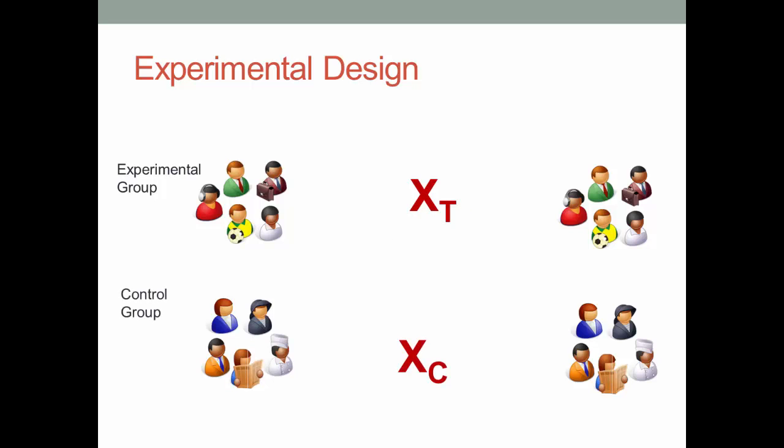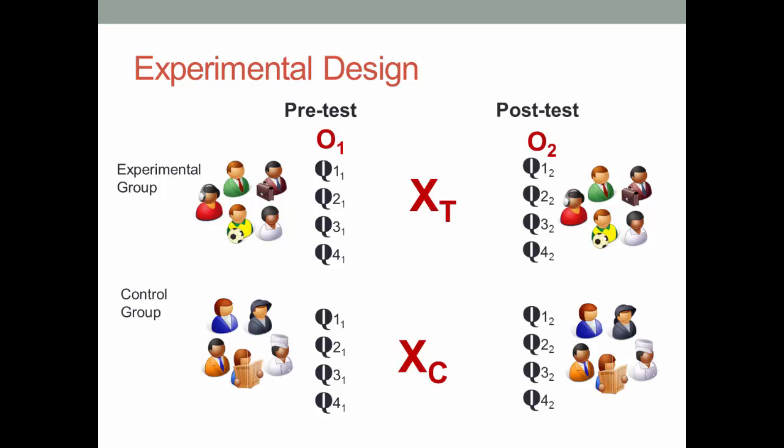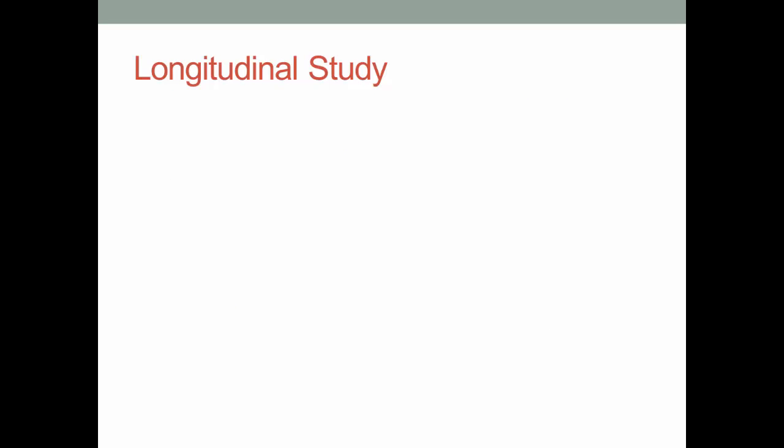This allows you to compare the differences between the pre-test, or observation one, and the post-test, or observation two, and between the post-test results of the experimental group, those exposed to the stimulus, and the control group, those not exposed to the stimulus. This experimental design, though, is not really a trend study, because we are using the same set of respondents. Remember that the trend study uses a different set of respondents for each time. But it is a nice way to transition to the longitudinal study.